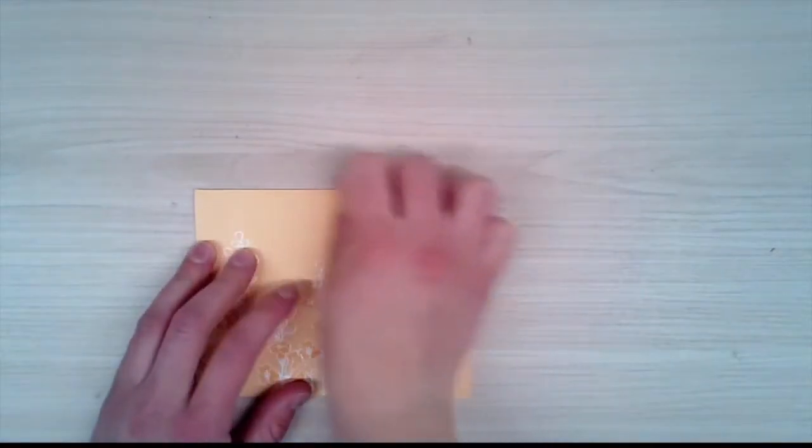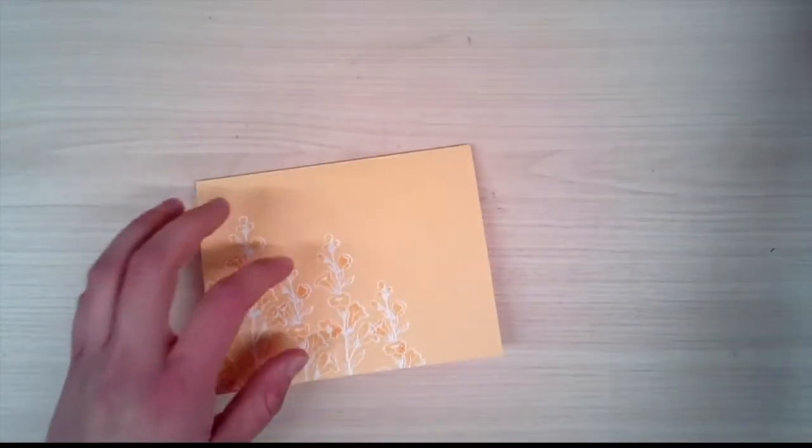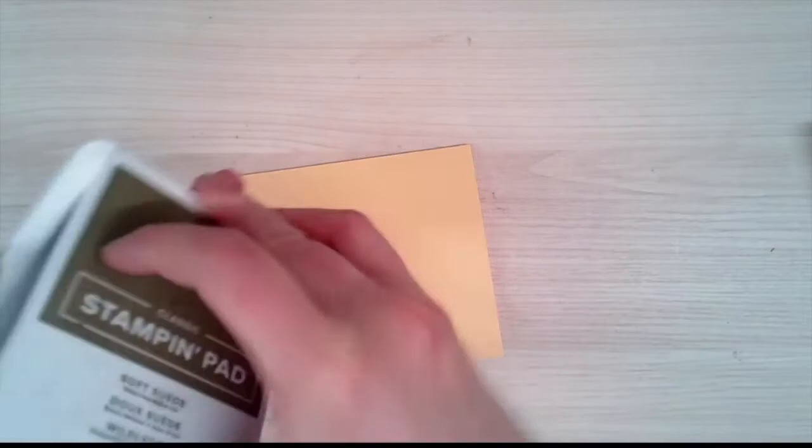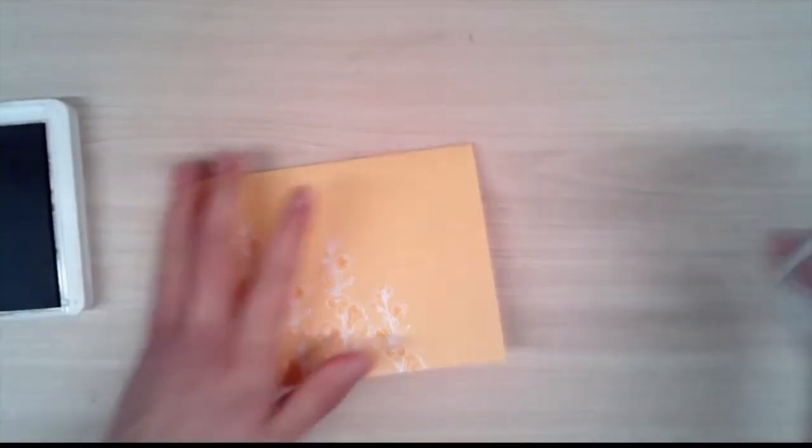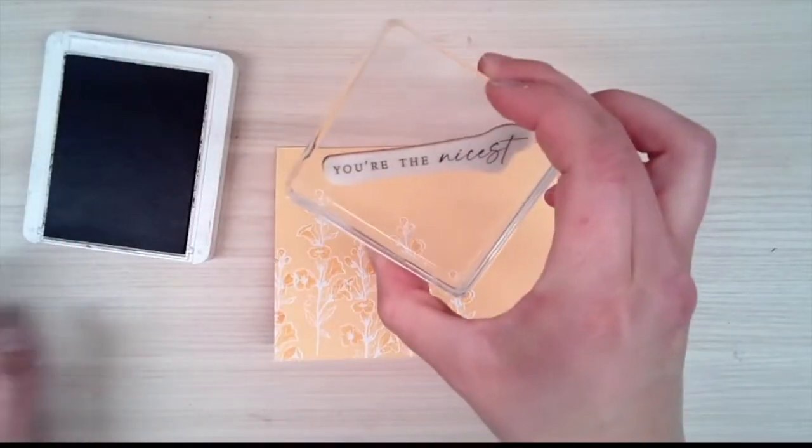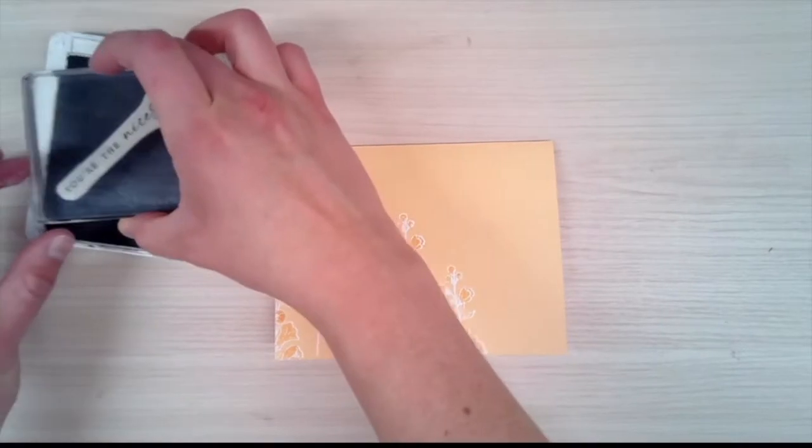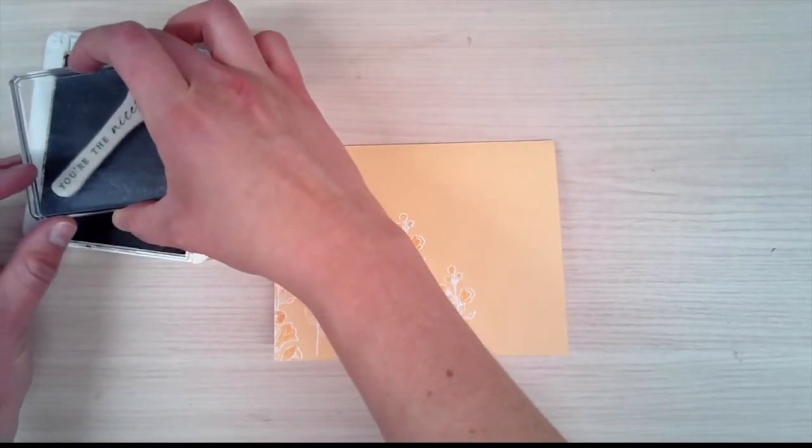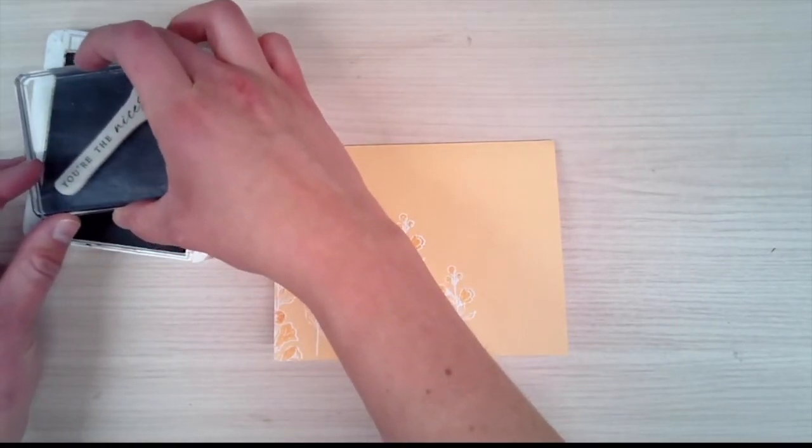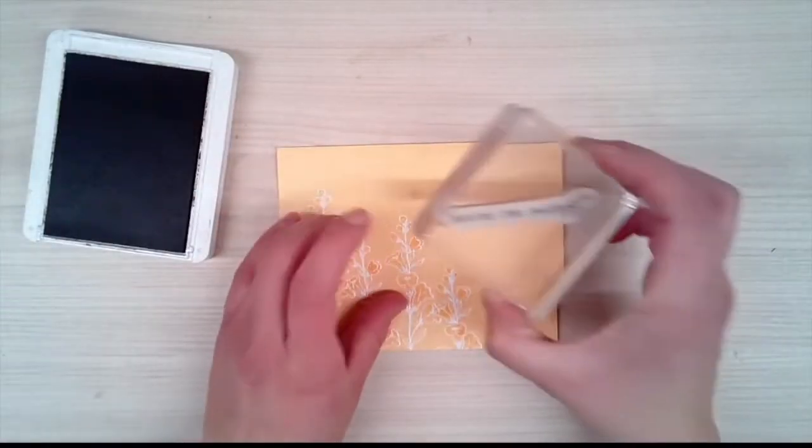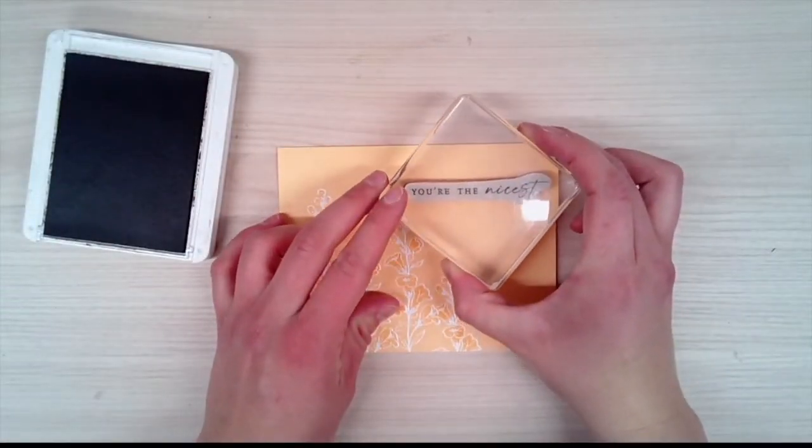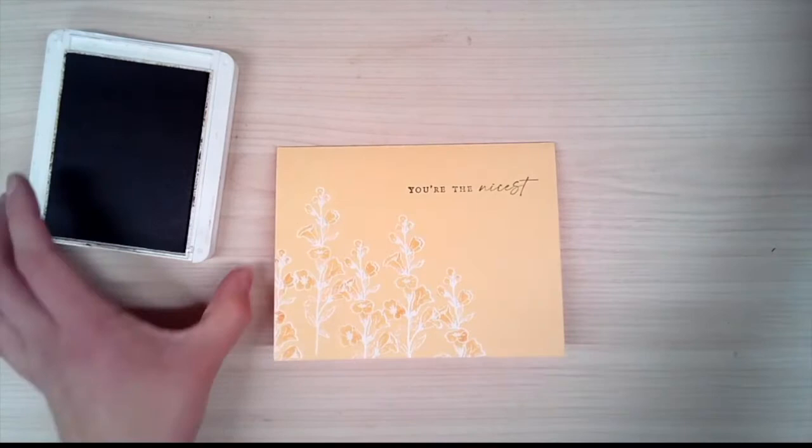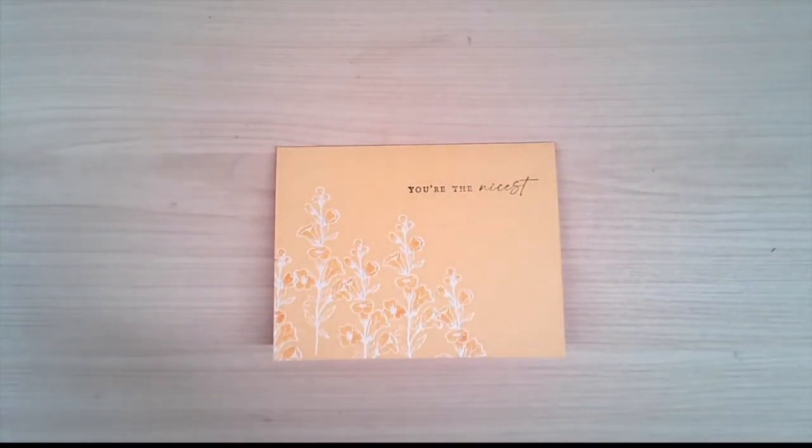Next we're going to take the soft suede ink and the You're the Nicest stamp from the Honey Bee Home stamp set. We'll tap that there and stamp this right up at the top. That comes out a really nice image.